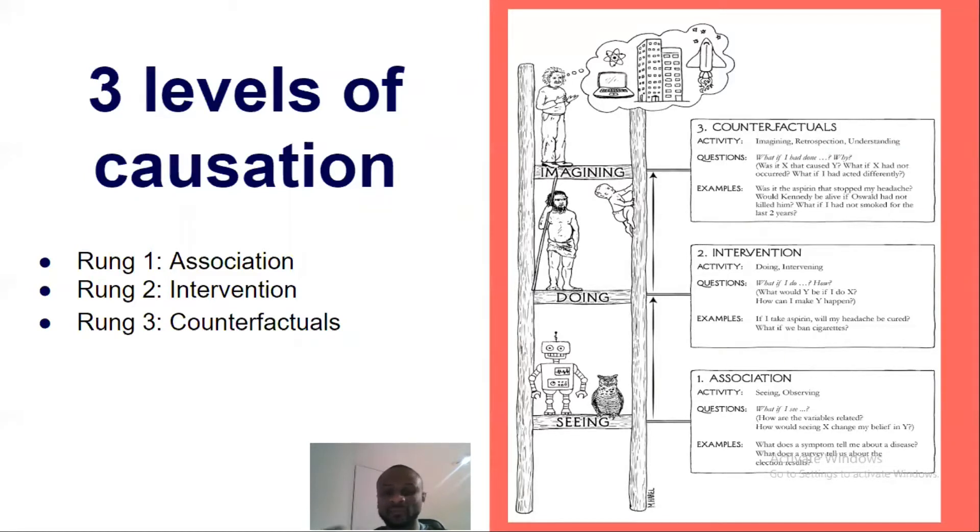But the next level is intervention. This is where we want to understand causality and see how A causes B, cause and effect. So looking at trying to understand the intervention example, what will make the day dawn. And it's not cock crow. Cock crow is just correlation. So you want to understand causality.